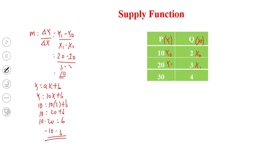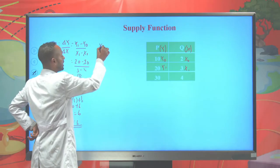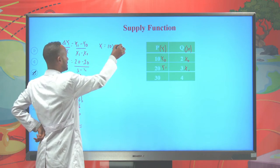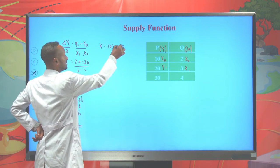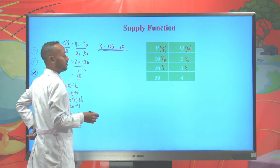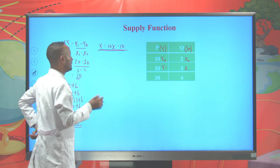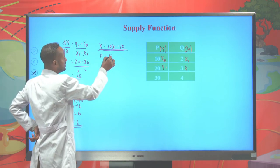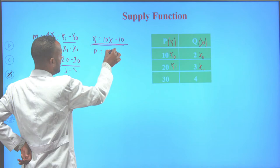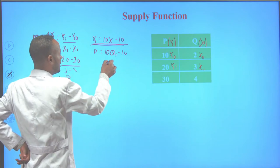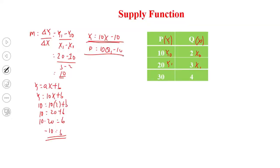So we have the equation y = 10x - 10. This is our function. When we convert it into our lesson's notation, we represent y with price and x with quantity supplied, giving us: price = 10 × quantity supplied - 10. This is the supply function.